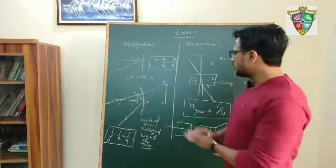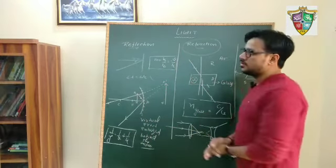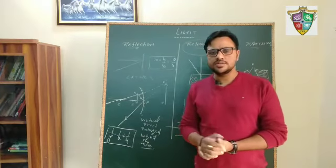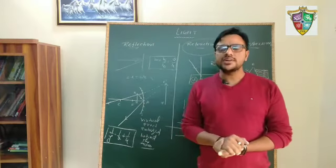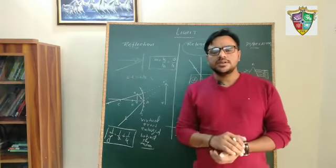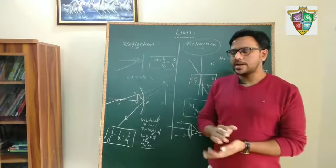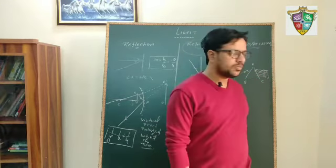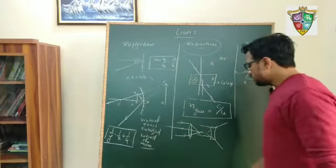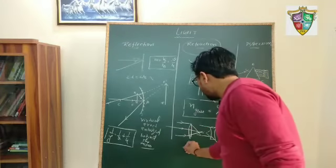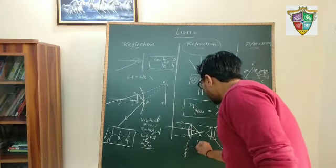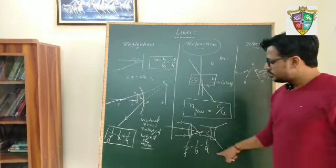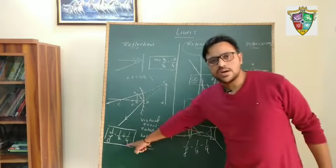So these are the main topics that we have to cover. This is only the theory and brief explanation of these topics. If we have to solve numericals, we will see how the mirror formula and lens formula are used. The lens formula is the relation between focal length, image distance, and object distance. You can see the difference: the mirror formula is 1/F = 1/V + 1/U, while the lens formula uses 1/V - 1/U. We can use both formulas for solving different types of numericals.